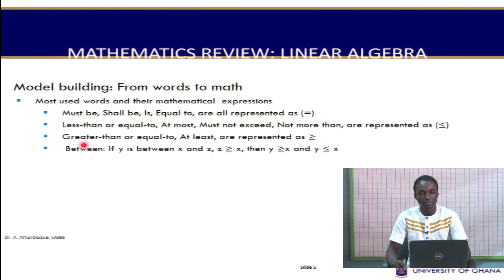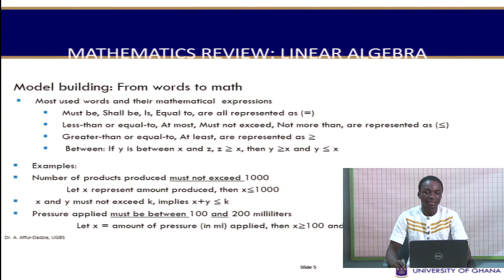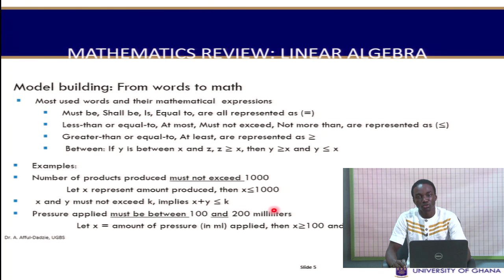Similarly, words such as 'greater than or equal to' or 'at least' are represented with the greater-than-or-equal-to symbol. For example, 'the number of products produced must not exceed 1,000' means that if x is the amount of product produced, then x is less than or equal to 1,000.